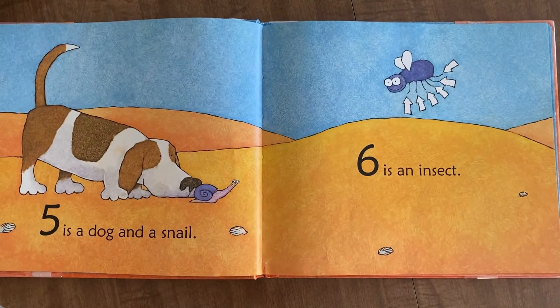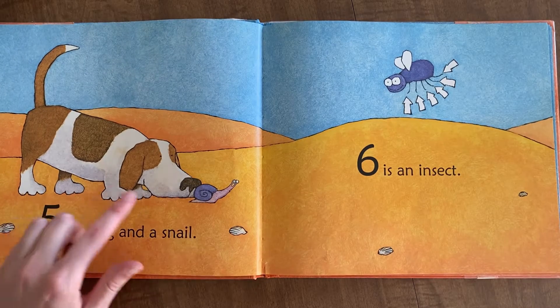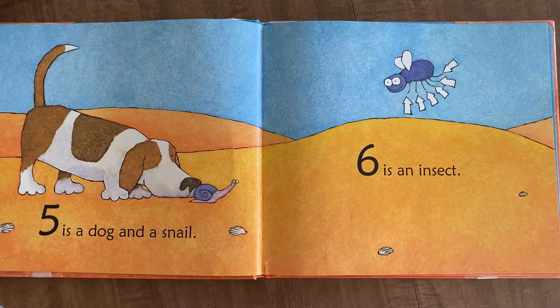Five is a dog and a snail. One, two, three, four, five — five feet.